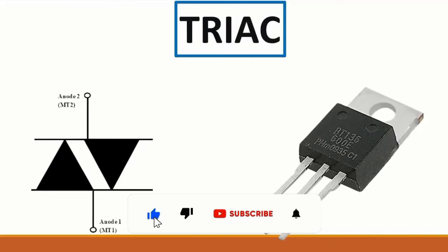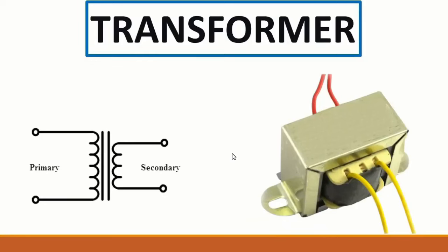Next we have the TRIAC - this is its symbol, with two anodes. Then we have the transformer, which is a component found in switch mode power supply boards.